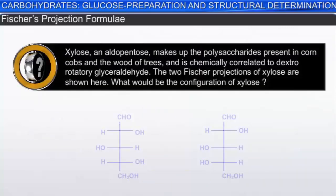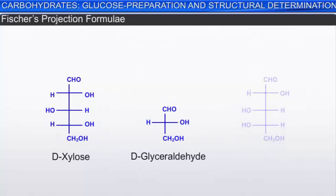Here is a problem for you to try. Xylose, an aldopentose, makes up the polysaccharides present in corn cobs and the wood of trees, and is chemically correlated to dextrorotatory glyceraldehyde. The two Fisher projections of xylose are shown. What would be the configuration of xylose? By comparing the configuration of the lowest asymmetric carbon in xylose with glyceraldehyde, we can assign D-configuration to xylose.